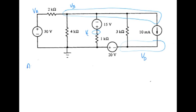So we'll begin with node A. This is an easy one. VA is simply 30 because of the voltage source between ground and node A.